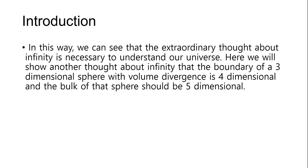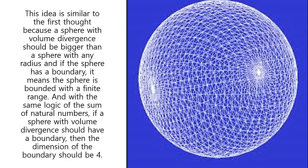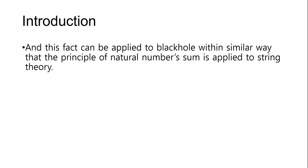In this way, we can see that extraordinary thought about infinity is necessary to understand our universe. Here, we will show another thought about infinity: that the boundary of a 3-dimensional sphere with volume divergence is 4-dimensional, and the bulk of that sphere should be 5-dimensional. This idea is similar to the first thought because the sphere with volume divergence should be bigger than a sphere with any radius. And with the same logic of the sum of natural numbers, if a sphere with volume divergence should have a boundary, then the dimension of the boundary should be fuller, and this fact can be applied to black holes in a similar way that the principle of natural numbers is applied to string theory.